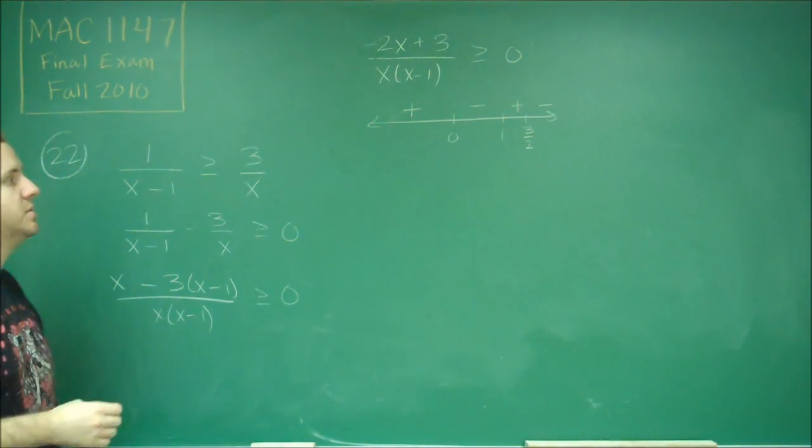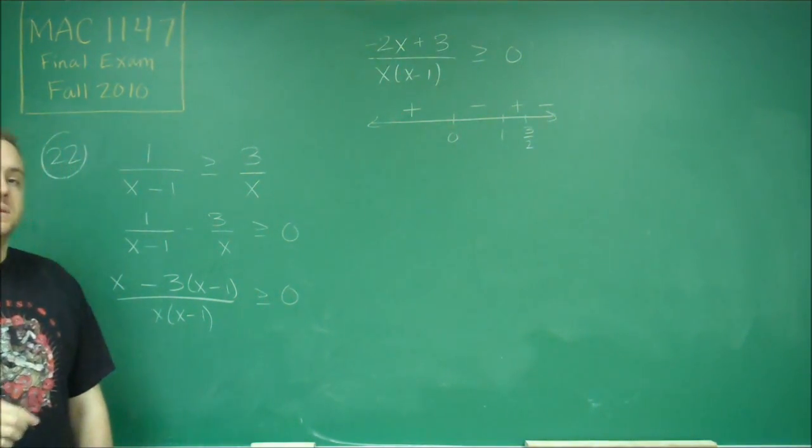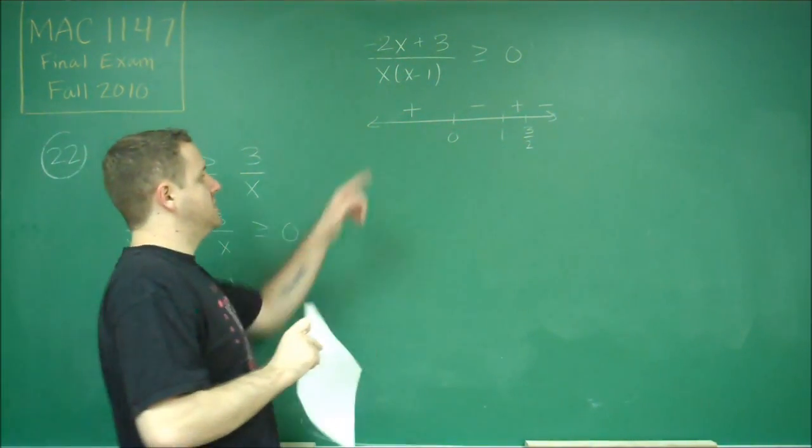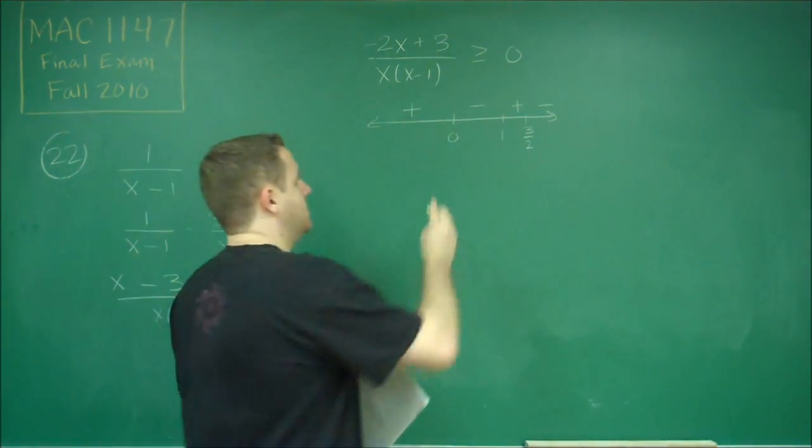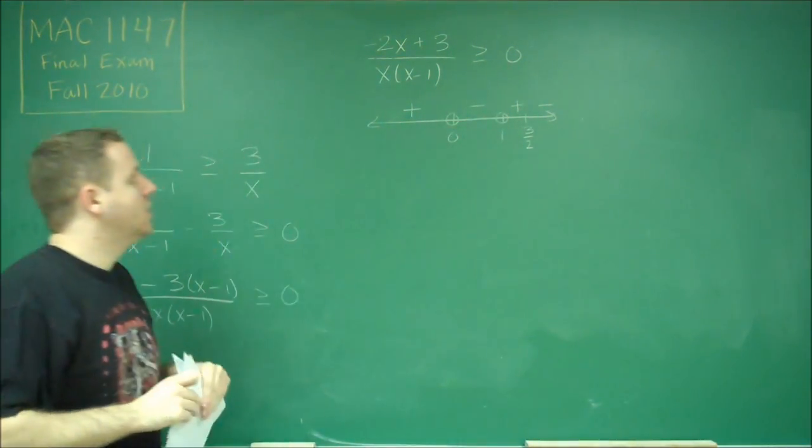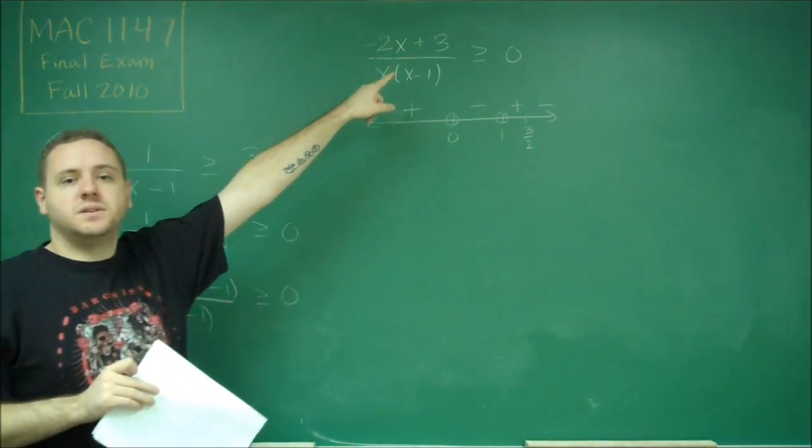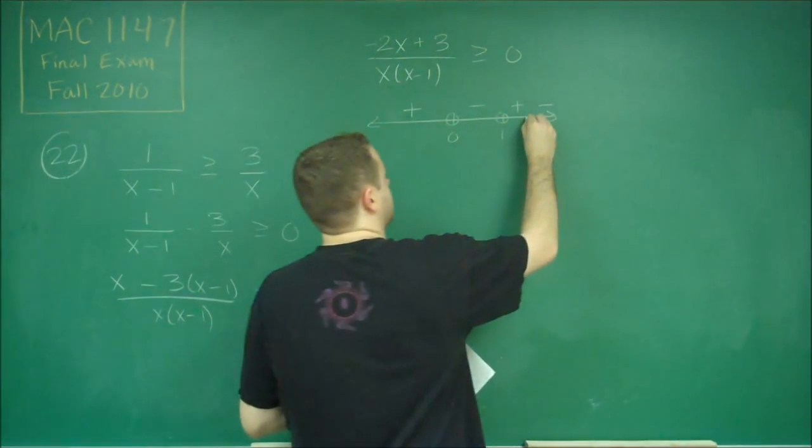We wanted this to be greater than or equal to 0. So the last thing we need to do is, what happens at all of the points that are on the number line? Well, 0 and 1 make the denominator equal to 0, which is bad. We can't have that. So these must be open circles. 3 halves makes the top equal to 0, and since this is greater than or equal to, that's fine. So this would be a closed circle.